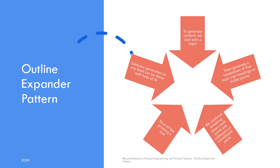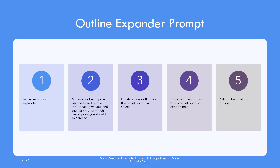You start with a topic, then concentrate on generating subheadings or constituent parts for that topic, then pick one specific subtopic and repeat the whole thing — or generate the content for that subtopic. It's like growing a tree, where at each decision point you decide whether to grow a branch or a leaf. Large language models like ChatGPT are able to generate subtopics for almost any topic you provide, and can even generate content for those subtopics.